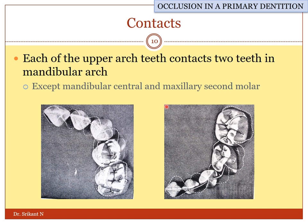The upper and the lower teeth contact with each other. As you can see in the picture on the left, the permanent incisors are bigger than their mandibular counterparts. The permanent maxillary central incisor contacts with two incisors of the mandibular arch. Except for the third molars, all the other teeth contact with two opposing counterparts.